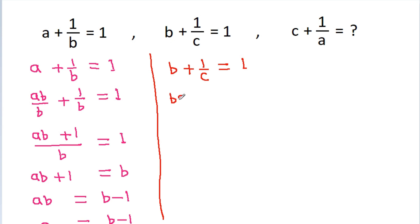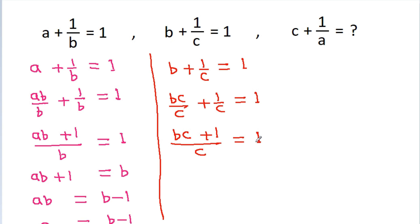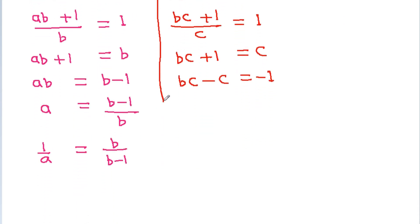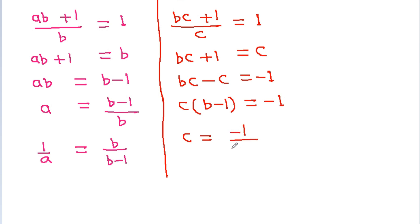From the second equation, b plus 1 by c equals 1, giving bc plus 1 by c equals 1, so bc plus 1 equals c, and bc minus c equals minus 1. Factoring: c times (b minus 1) equals minus 1, so c equals minus 1 by (b minus 1).